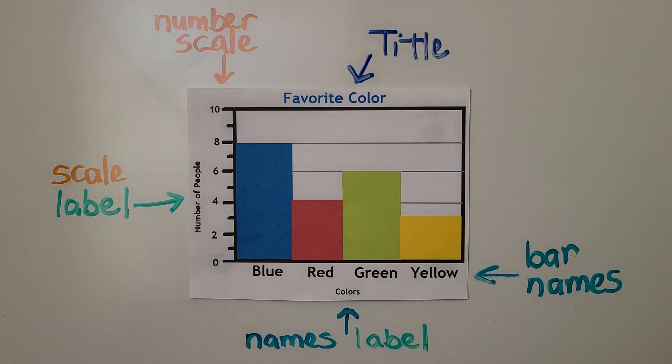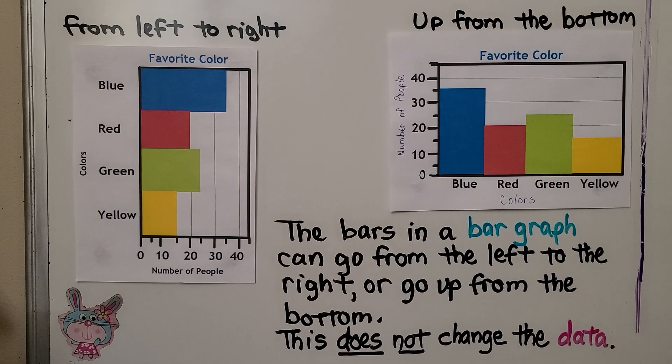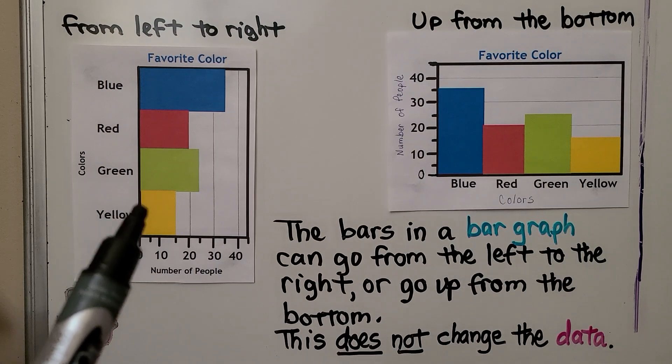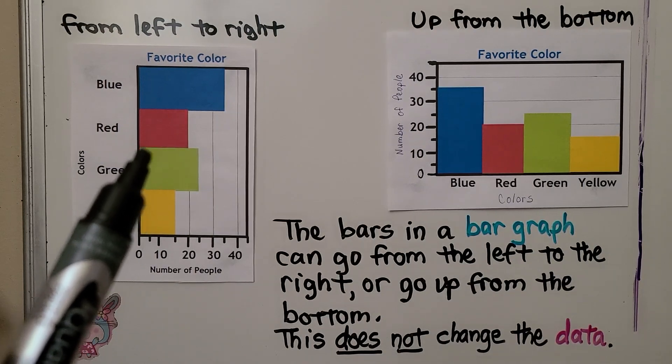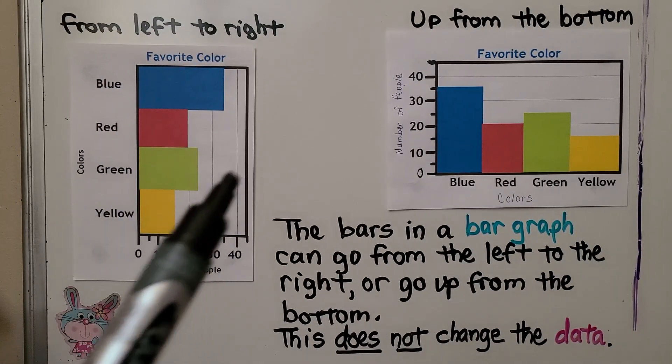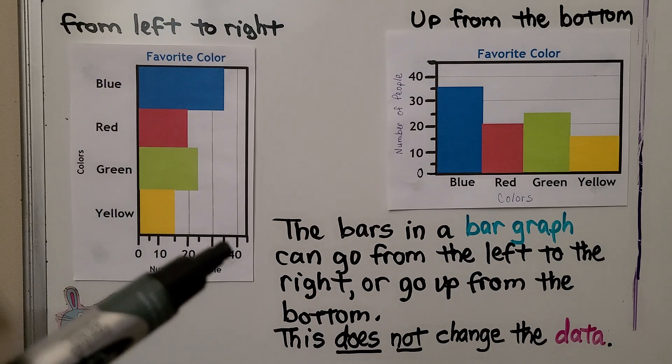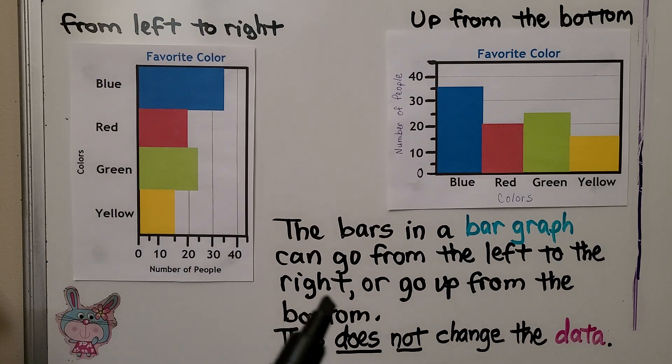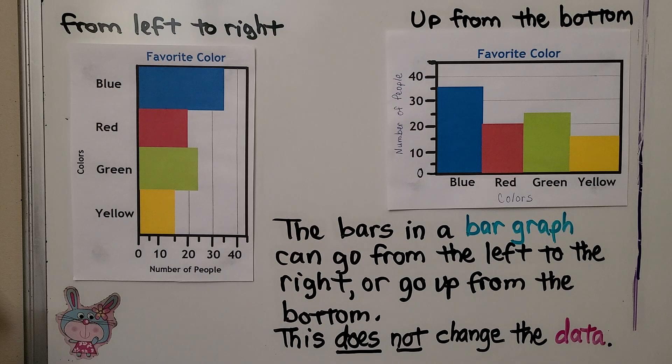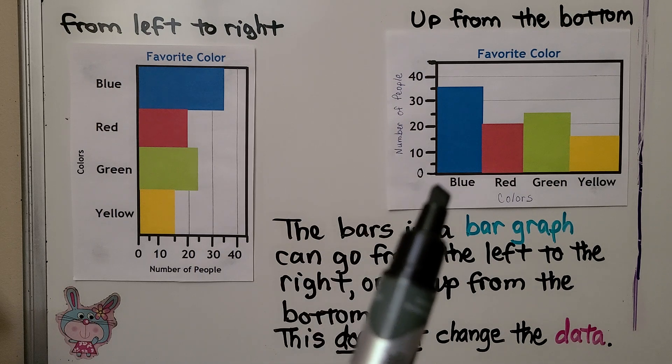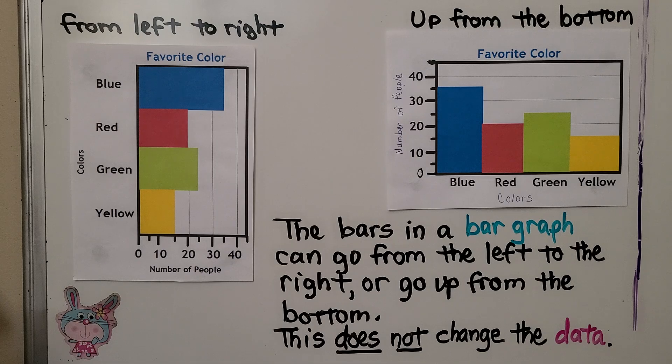And we can read data that's on a bar graph. The bars on a bar graph can start here and go from the left side to the right side. And here the number scale is down here. And the bars in a bar graph can go up from the bottom, starting here at zero and then going upward. This does not change the data. They're just going in a different direction.